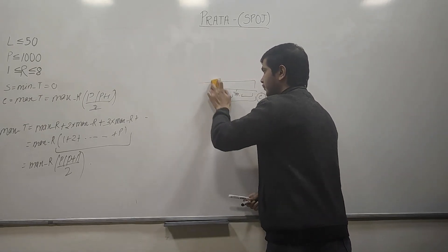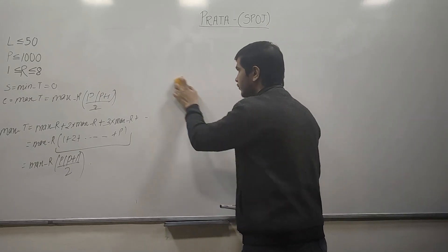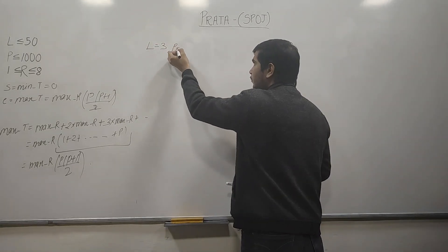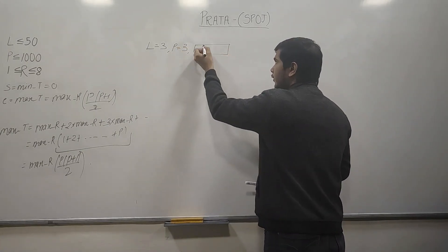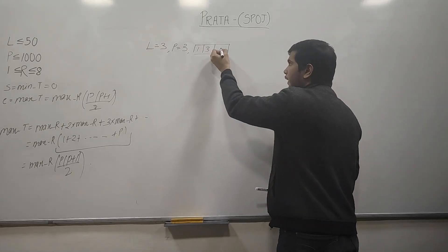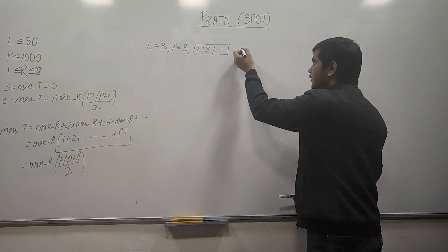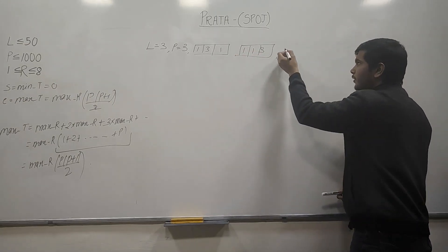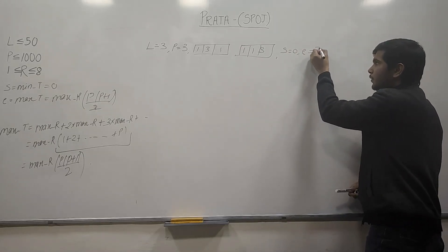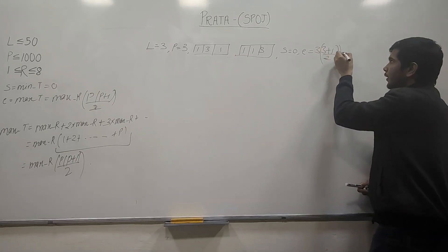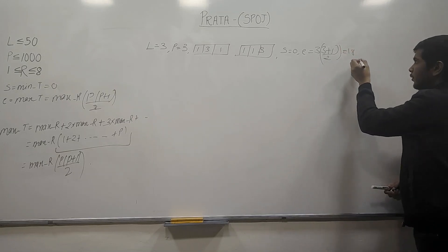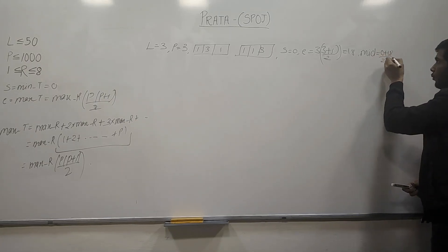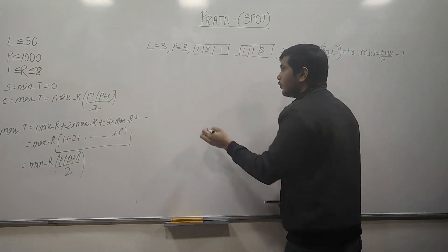Let's take a small example. Let L=3 (size of the array), number of prattas to form P=3, and the cook ratings array is [1, 3, ...]. We sort this array. Starting time is 0, ending time is 3×(3×4/2) = 18. Mid is (0+18)/2 = 9. We make a table to check: cook chosen, number of prattas formed, time taken, and mid value.